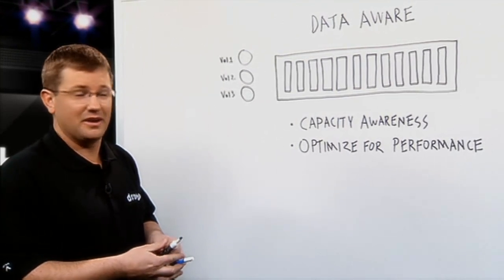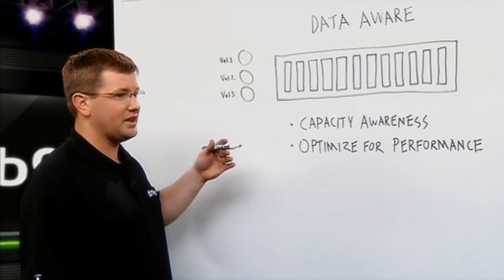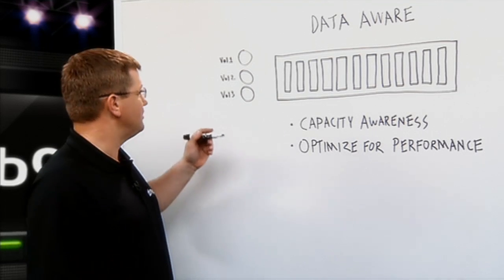A Drobo is different primarily because it is aware of that data. Drobo looks inside the volume and understands how full that volume is and how it's being utilized.